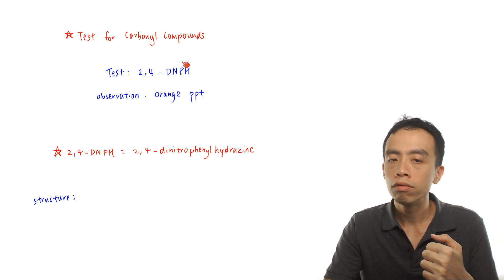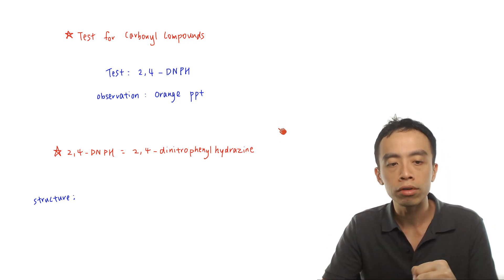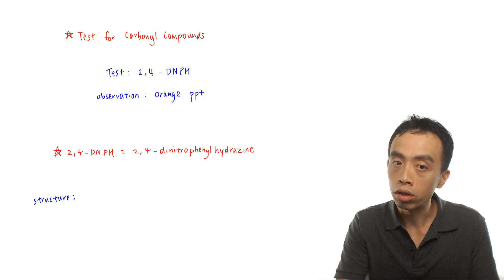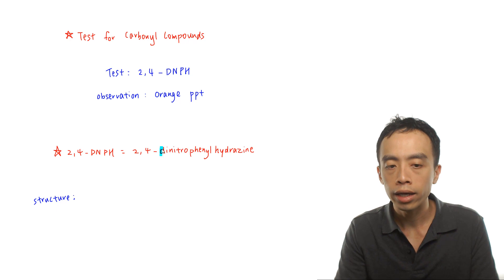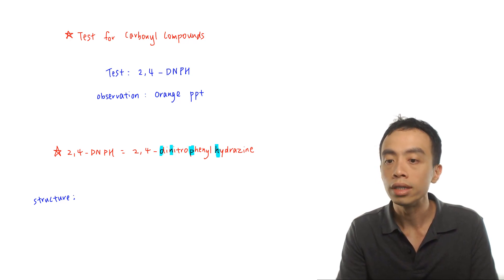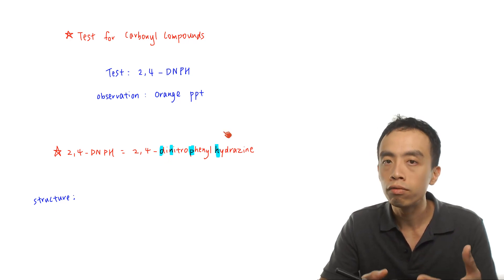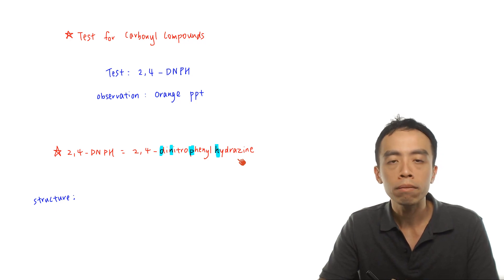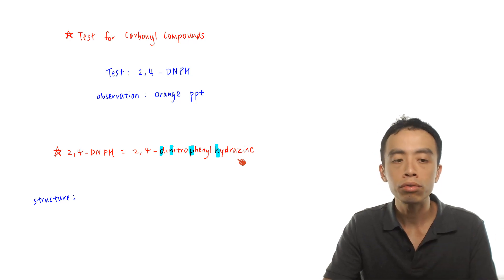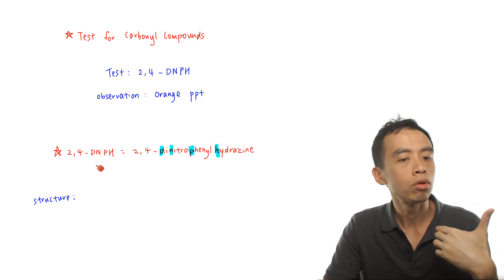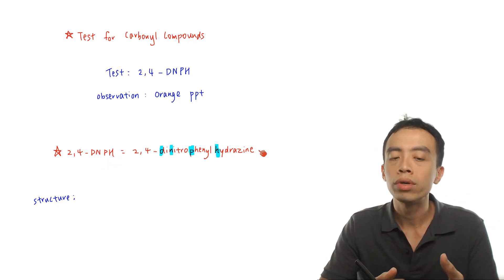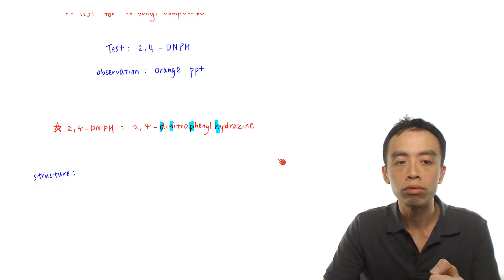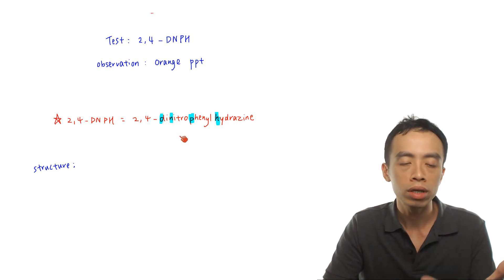The first thing we have to clarify is 2,4-DNPH. What is 2,4-DNPH? The full name for this is actually 2,4-dinitrophenylhydrazine. The abbreviation D-N-P-H comes directly from that full name. It is recommended that students should remember the full name because the full name is tied directly to the structure and vice versa. If you only remember 2,4-DNPH, you don't know what D, N, P, and H mean — it is pretty useless. So we should remember the structure and the full name together, and once we have the full name, the short form 2,4-DNPH becomes very straightforward.